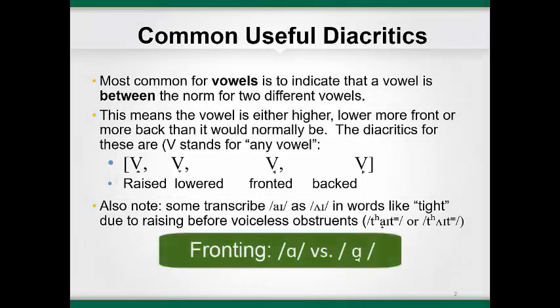First, an example of fronting is the way that some people from the Northeast say the AH sound. It's produced further forward than AH, but not far enough forward to be AH. Listen: AH versus AH. Or Boston versus Baston.